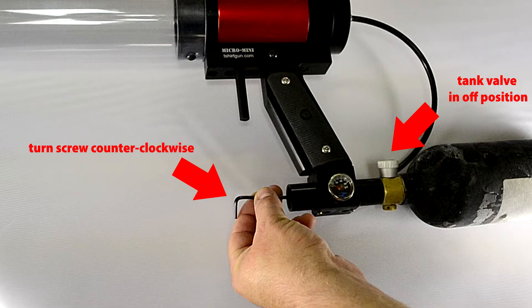The first thing we need to make sure is that the tank valve is in the off position and that the screw in the front of the regulator has been backed out completely by turning counter-clockwise using the eighth inch allen key that's provided.